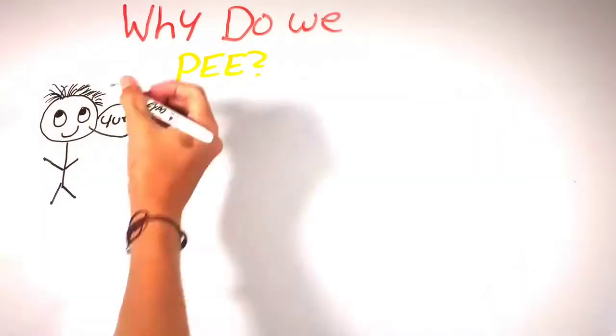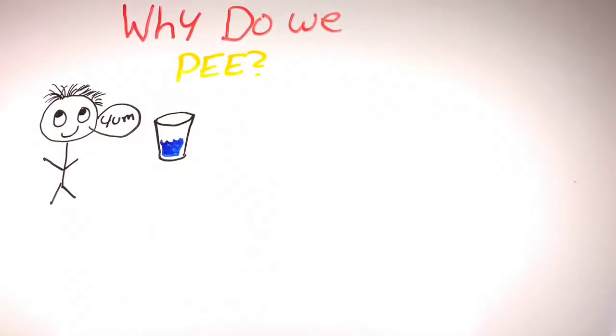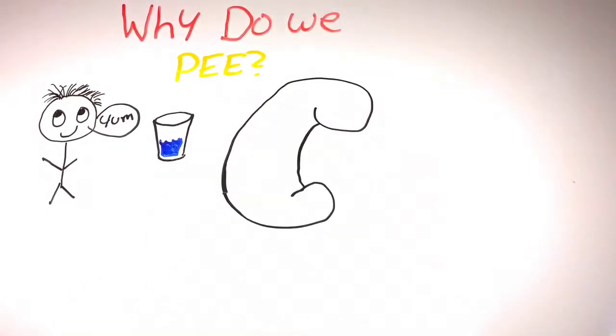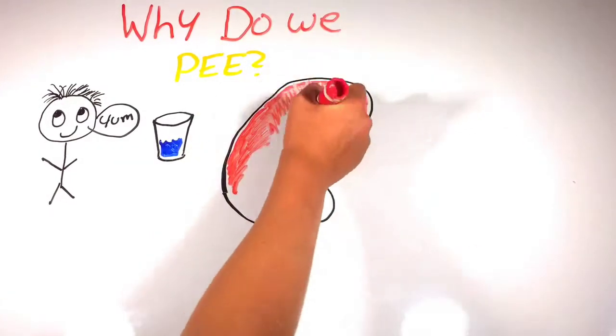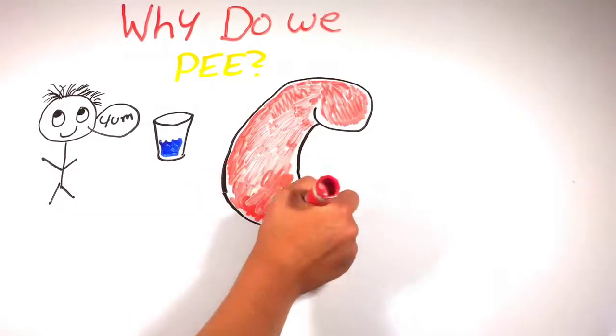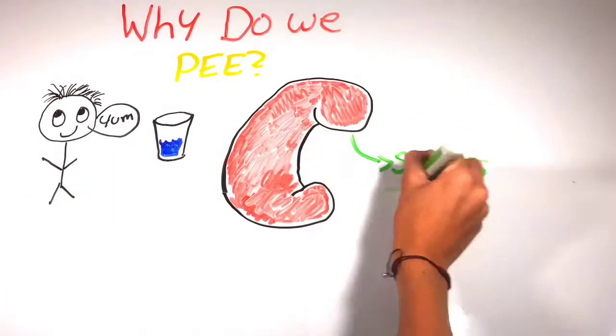Before we start, we should probably understand why we pee. When you drink a glass of water, the water will travel down and eventually get to your kidneys. There, your kidneys filter out the good stuff, such as sugars that can be stored and broken down to glucose and stored for later.